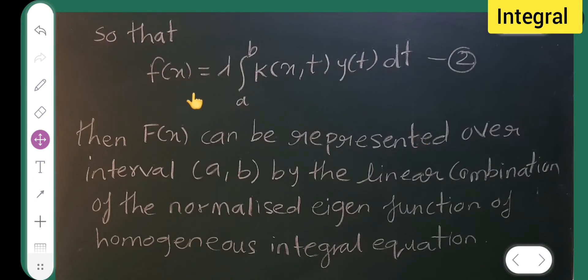f of x is equal to lambda integral from a to b. This is my kernel k of x, t y of t dt. And consider this has to be equation 2. Then f of x can be represented over interval a, b by the linear combination of the normalized eigenfunction of homogeneous integral equation.